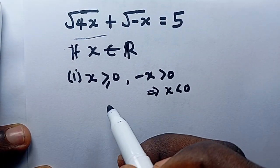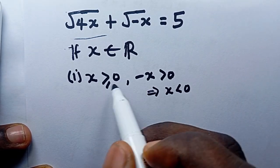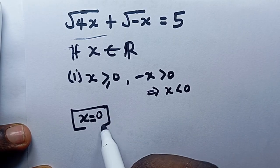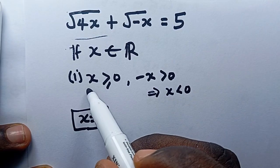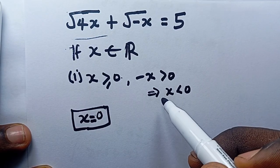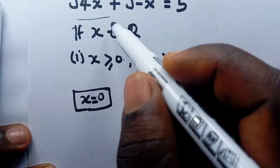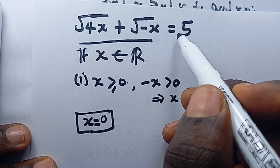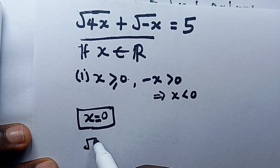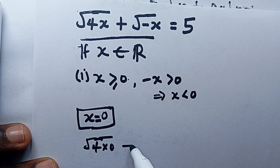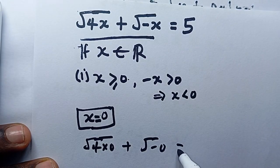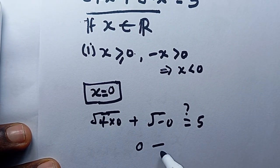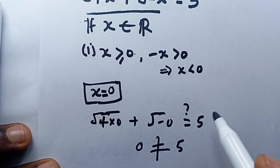When you combine all of these conditions, the only value that satisfies both x ≥ 0 and x ≤ 0 is x = 0. But if we check: root(4·0) + root(-0) = 0, which is not equal to 5. So there is no real solution.